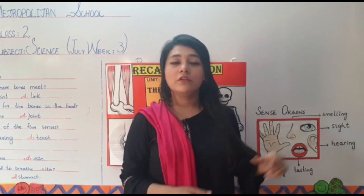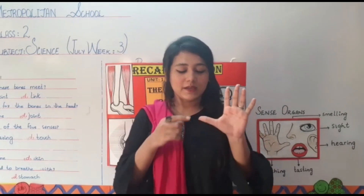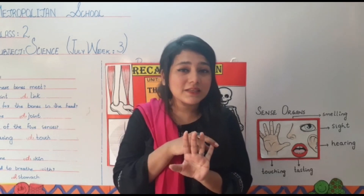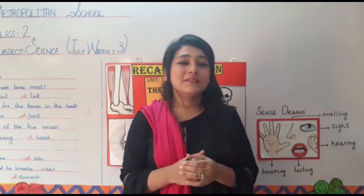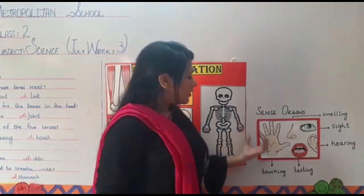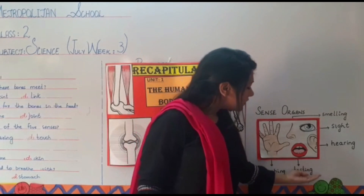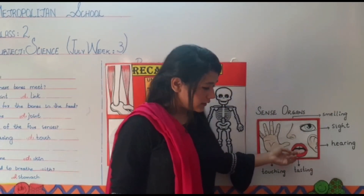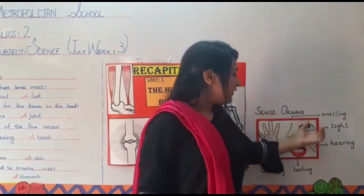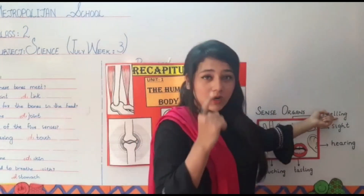After learning about the human body, we learned about senses. How many senses do we have? We have five senses: touching, smelling, tasting, sight, and hearing. For touching we use our hand or our skin. For tasting we use our tongue. For hearing we use our ears. Sight is done through our eyes, and smelling is done through our nose.